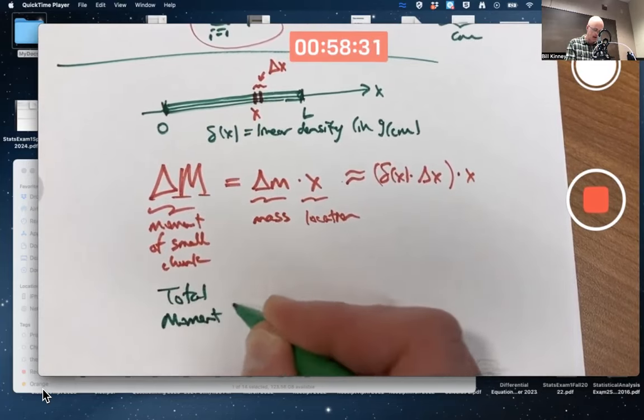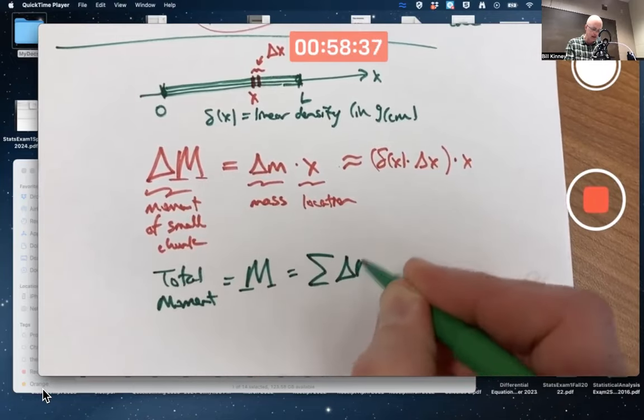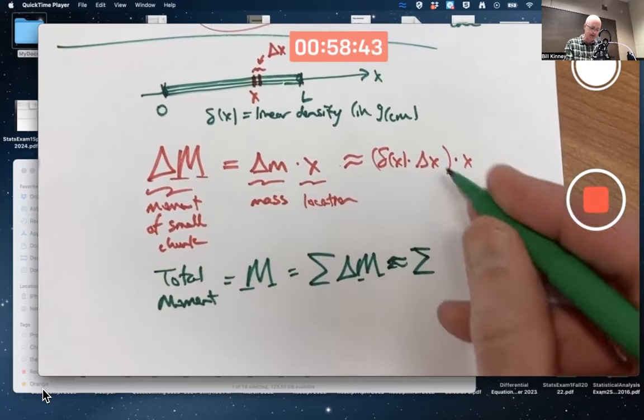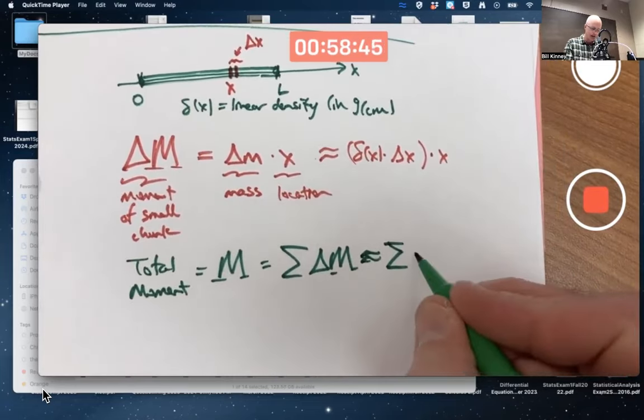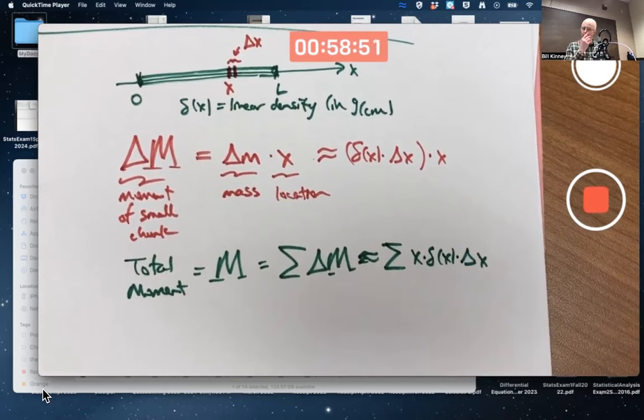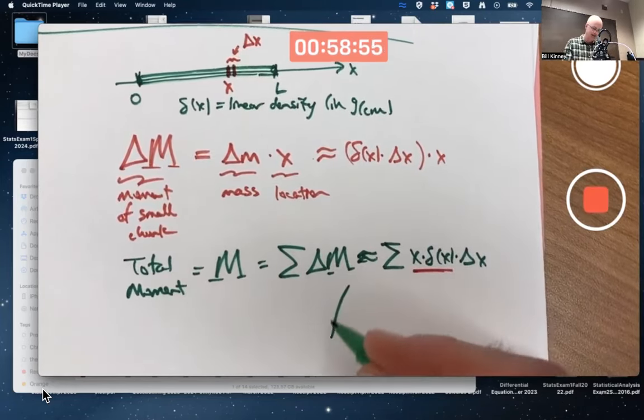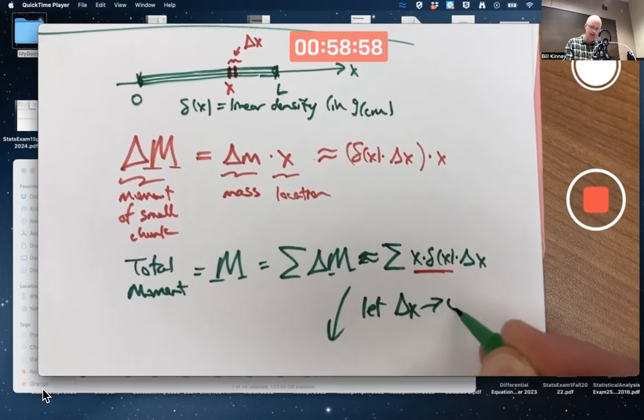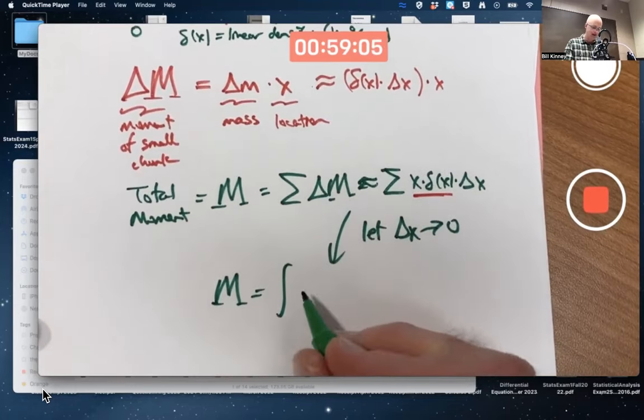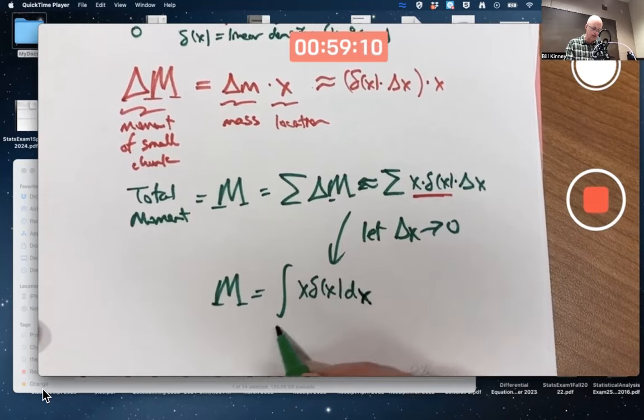What's the total moment of the thin rod? Call it capital M. It would be the sum of the little moments, which would be approximately a sum of x times δ(x) times Δx. And hey, that looks like a Riemann sum for that function. Let Δx go to zero. The total moment, capital M, becomes the integral of x times δ(x) with respect to x over the interval from zero to L.